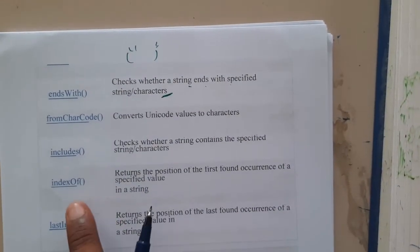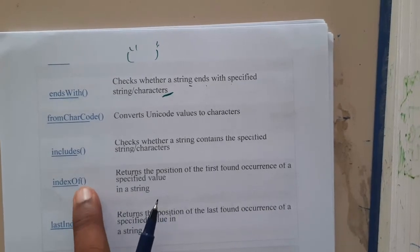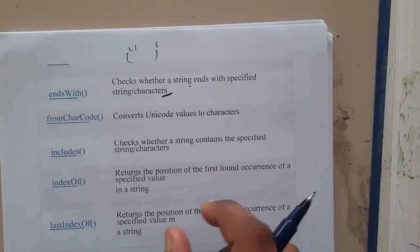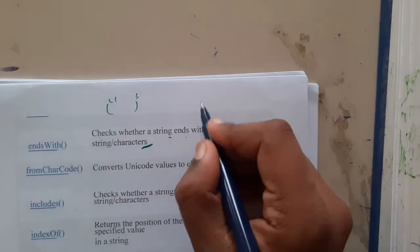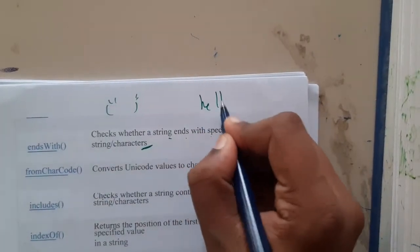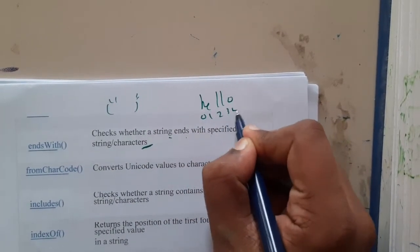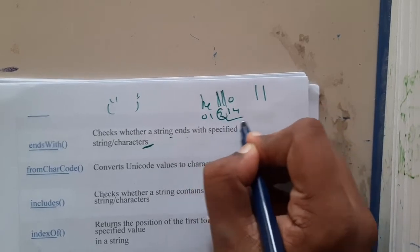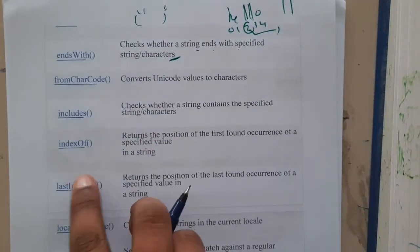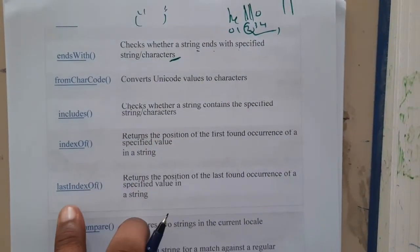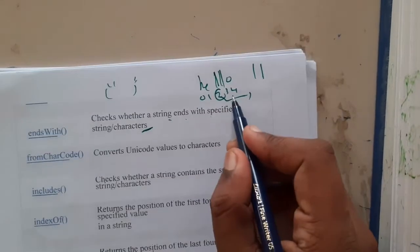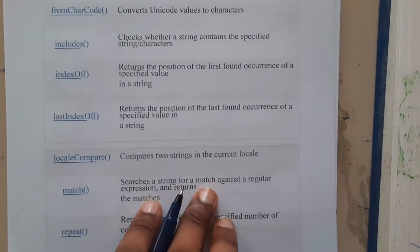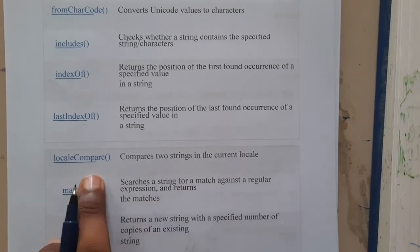`indexOf` checks the position of a character or substring. For example, in 'hello' with indices 0 1 2 3 4, if you search for 'll' it will return 2, which is the first occurrence. Similarly, `lastIndexOf` returns the last index of the specified value.